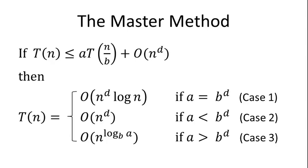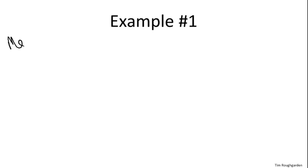So that's the master method. It's a little hard to interpret the first time you see it, so let's look at some concrete examples. Let's begin with an algorithm we already know the answer to — namely, merge sort. What's so great about the master method is all we have to do is identify the values of the three relevant parameters A, B, and D, plug them in, and we're done.